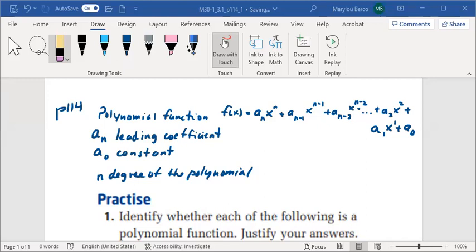It's f of x and it's defined where the degrees of the exponent are in descending order. They're going from highest to lowest. The first a_n, the leading coefficient, is a number.